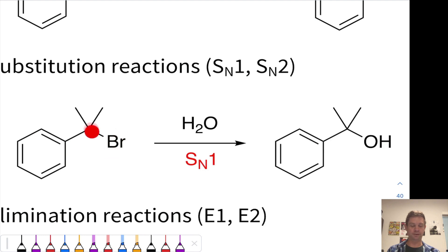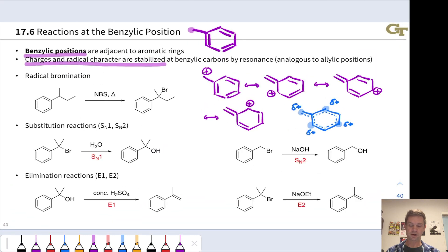So when bromide departs, you've got a cation stabilized by resonance that is relatively stable. As cations go, that gets attacked by water, and ultimately we end up with a neutral alcohol as the product.